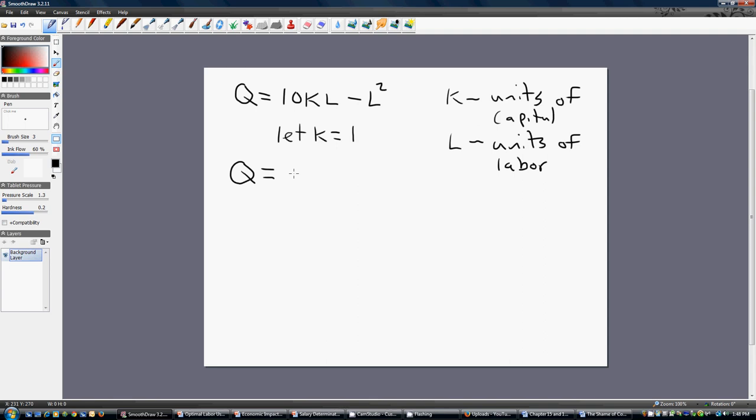So, after making that substitution in for K, our production function will simplify something like this. Now, you may be given the marginal product of labor. In that case, the marginal product of labor, MP subscript L, would be 10 minus 2L.